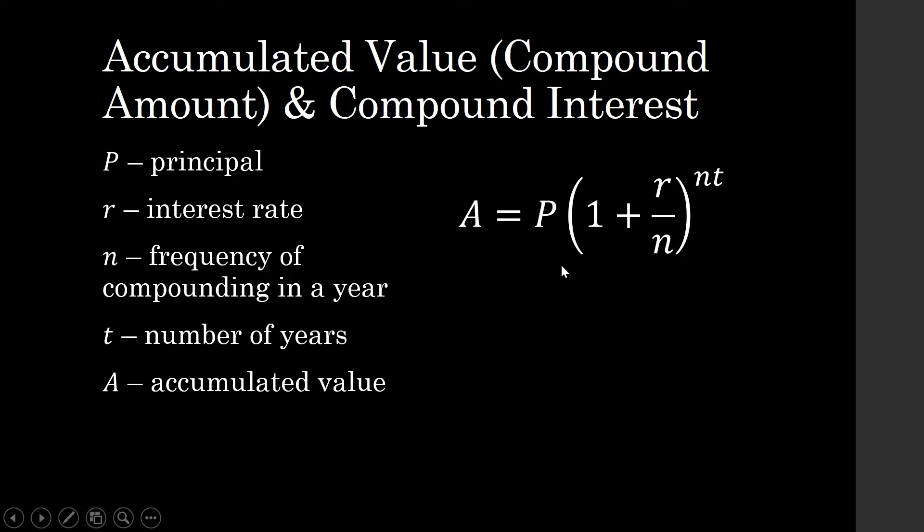P is our principal. You can look at it as a loan if this is about loans, or you can look at it as an investment. R is the interest rate. N is the frequency of compounding in a year. T is the number of years. And A is our accumulated value.